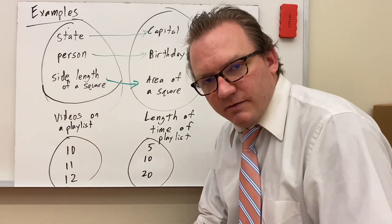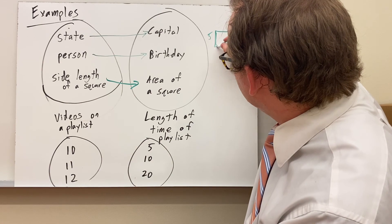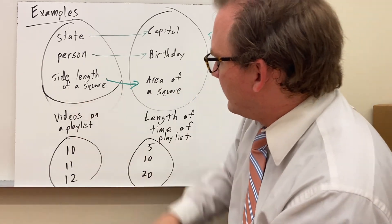That is a function. Side length of a square to area of a square is a function. Whatever I put for my side length, there's only one possible area based on that.